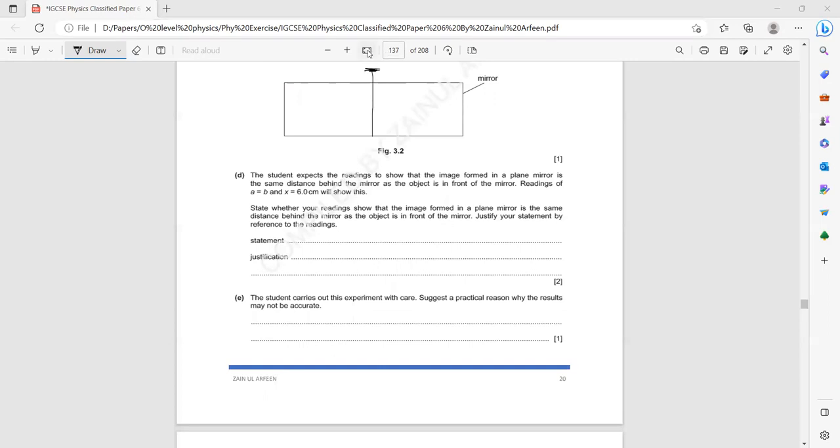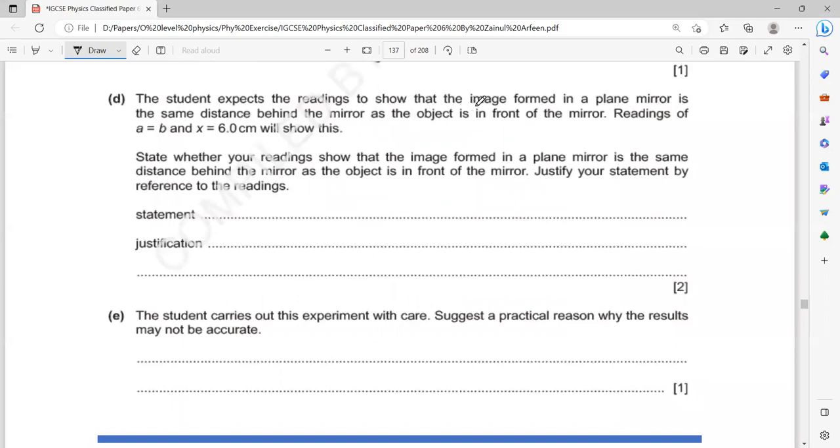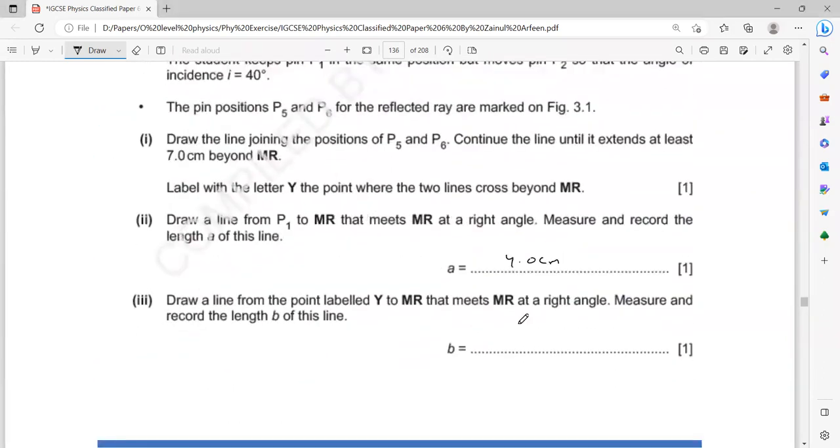In part D. The student expects the readings to show that the image formed in a plane mirror is the same distance behind the mirror as the object is in front. The reading A equals B and X will show this. State whether your reading shows that the image formed in a plane mirror is the same distance behind. So what you have to do, you have to compare the value of A with B. For example, say your value for A was 4.0 centimeters and the value of B is 4.3 centimeters. So what you can do, are the values equal? Is 4 equal to 4.3? Yes or no?